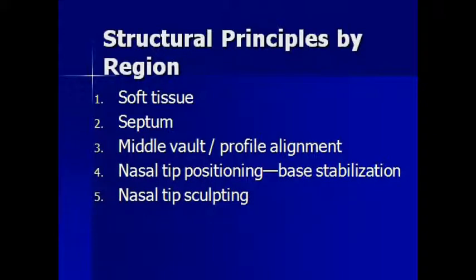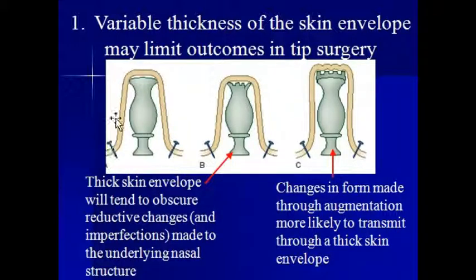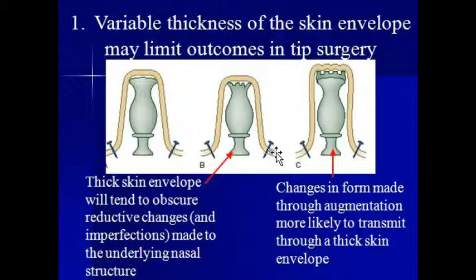We'll start with the soft tissue. We talked a little bit about the differences of thin skin and thick skin with regard to rhinoplasty, and this is another illustration that shows the point. If you imagine the nose as a sculpture represented by this vase, and the skin over it represented by this covering, if we make changes to the nose — particularly ones that are reductive in nature — the thick soft tissue envelope will fail to drape cleanly to reveal those changes.